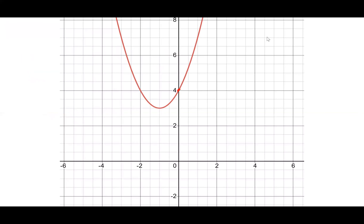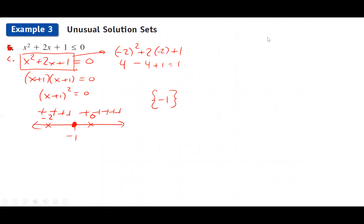Graphically: this parabola touches the x-axis at exactly x = -1 (a double root — it just touches and bounces back up). The y-intercept is at positive 1. The graph looks like a parabola tangent to the x-axis at -1. It's never below the x-axis, only touching at that one point.